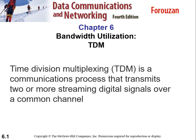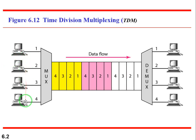Welcome to the new lecture of multimedia technology and applications. Today we are going to study about time division multiplexing, or TDM. Time division multiplexing is a communication process that transmits two or more streaming digital signals through a common channel. For example, four channels are going to transfer data through one link — this is called time division multiplexing.